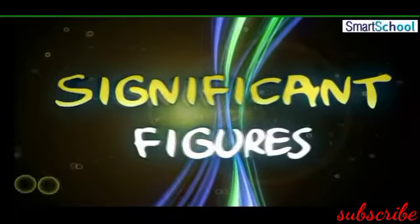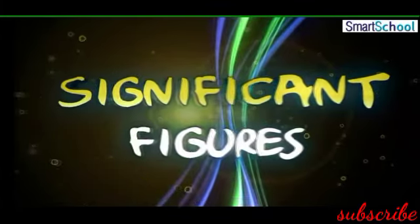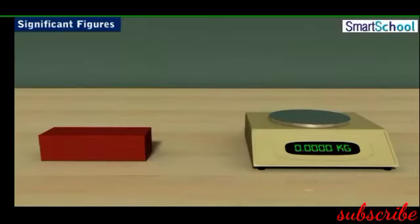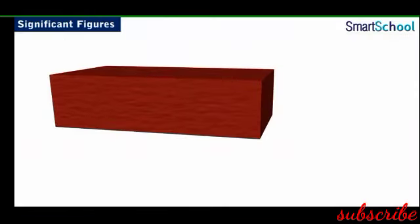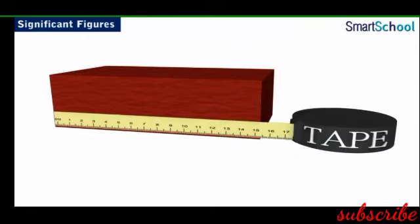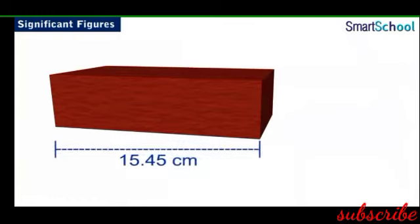In this module, we will be learning about significant figures. Whenever we measure the length or weight of an object, we note the measurement in the form of numbers. For example, consider a brick whose length is between 15.4 cm and 15.5 cm. Since we are not sure, we can say that the length is approximately 15.45 cm.